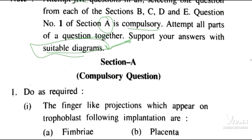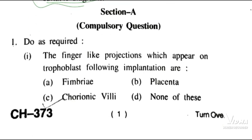Moving to Section A, which is the compulsory section — Do as directed. The finger-like projections which appear on the trophoblast following implantation are called Chorionic villi, which is the right answer.